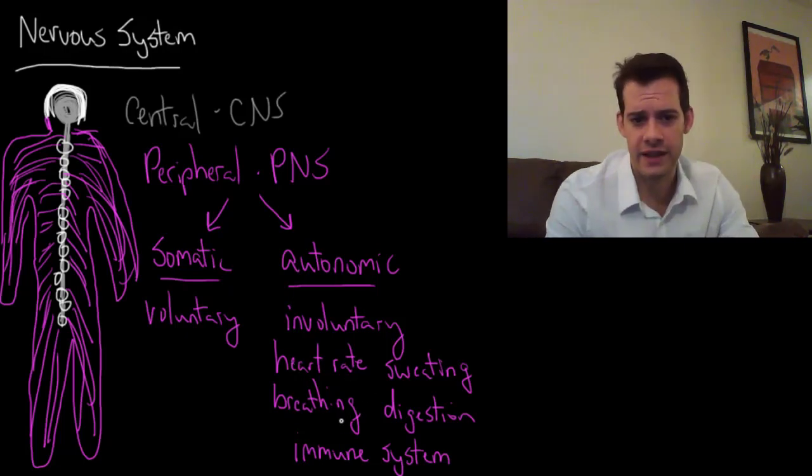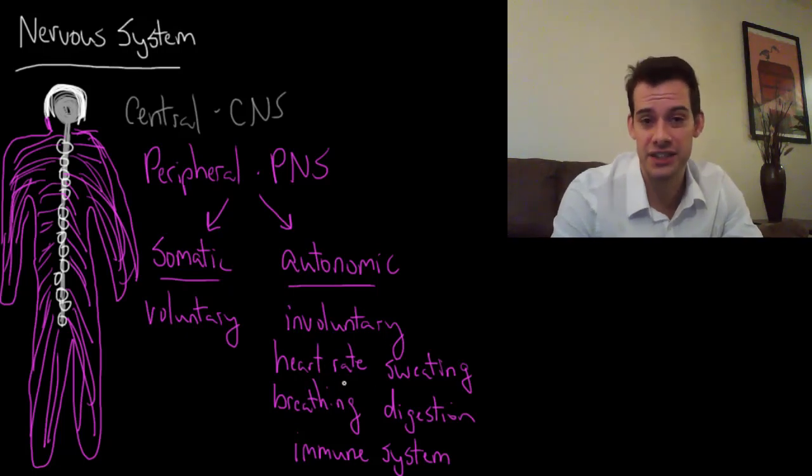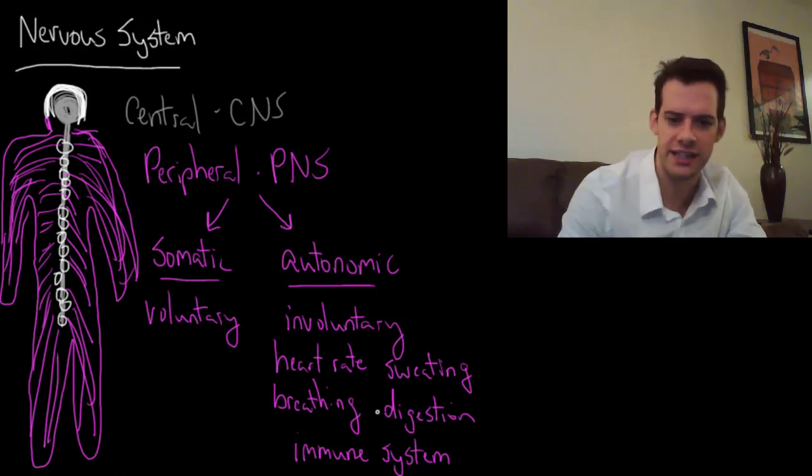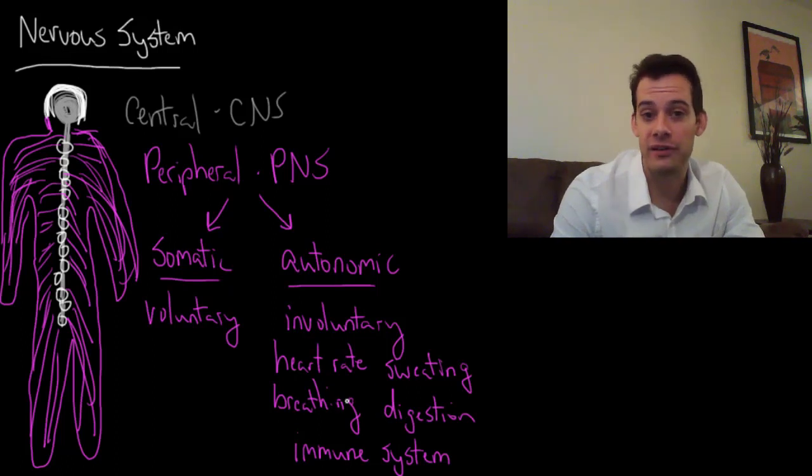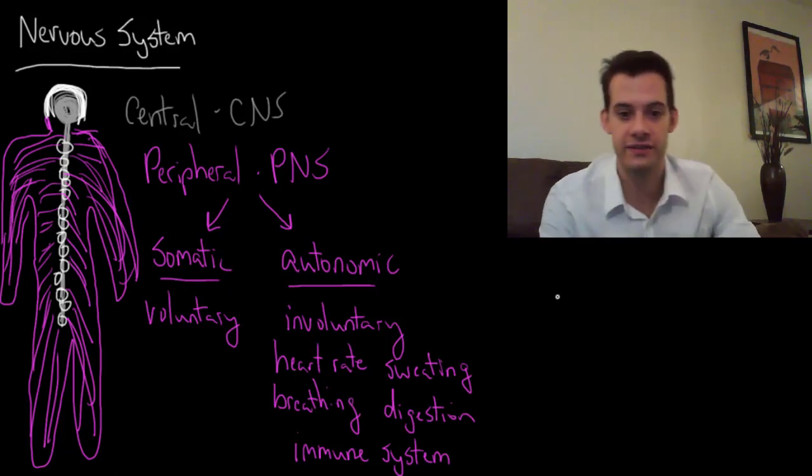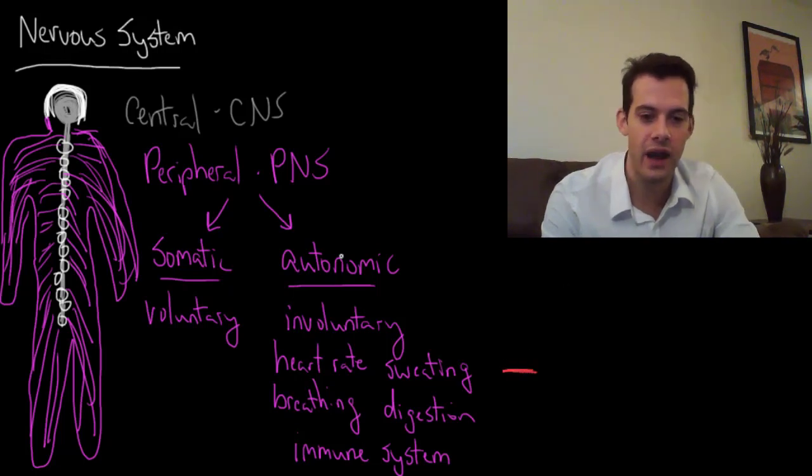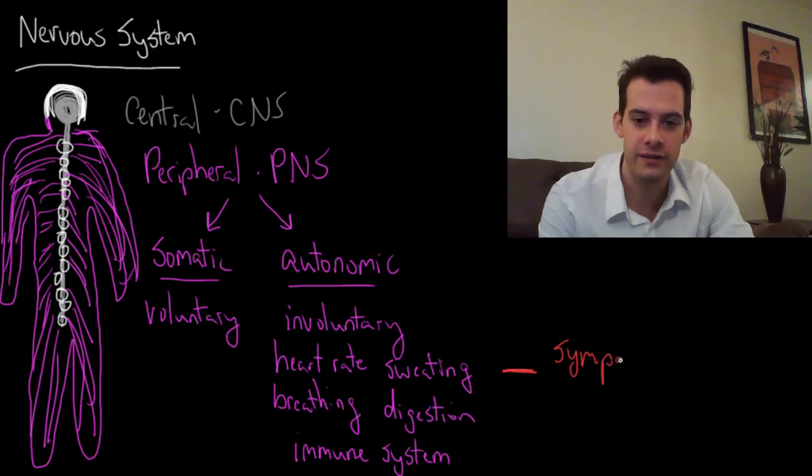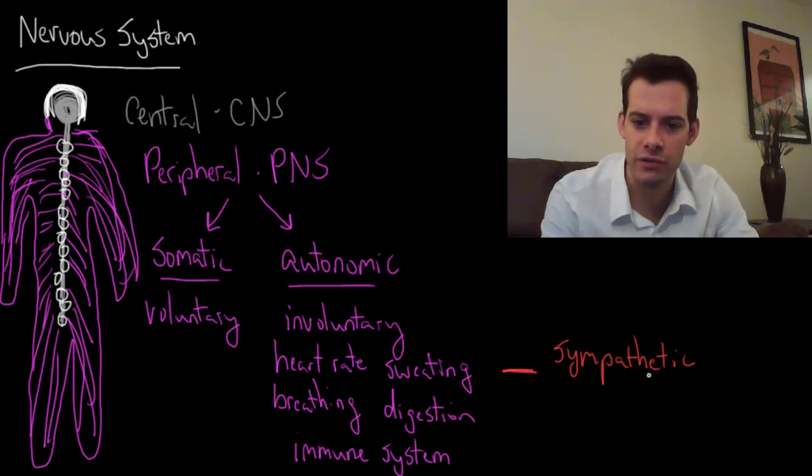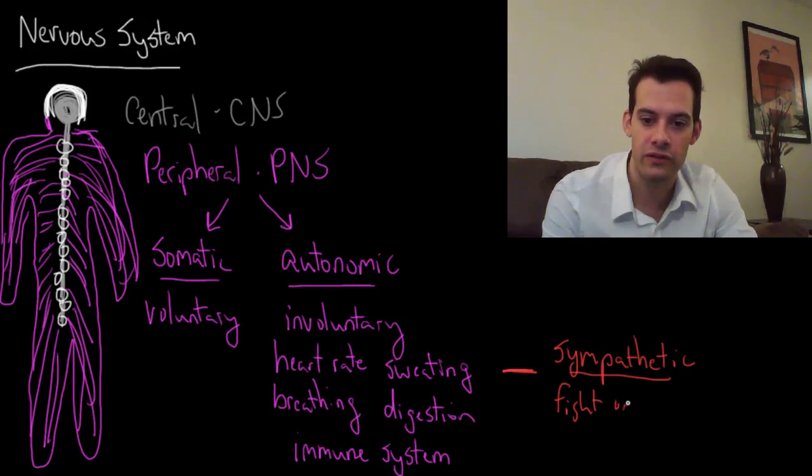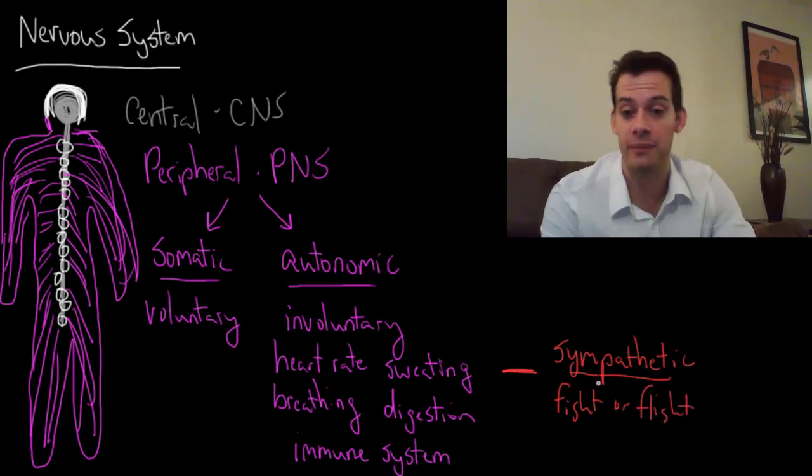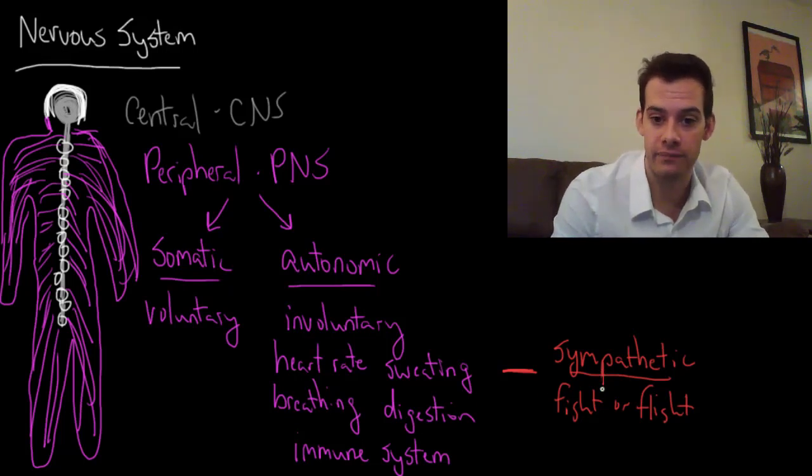Now all these systems of the autonomic division—your heart rate, breathing, digestion—are connected to one another. There's certain patterns to how they work; they don't occur in isolation. There's a pattern to how these things happen, and there's two main ways we can think about activation of these systems. We have sympathetic activation of the autonomic division, which refers to facing threats. The fight or flight response is a great example of sympathetic activation.